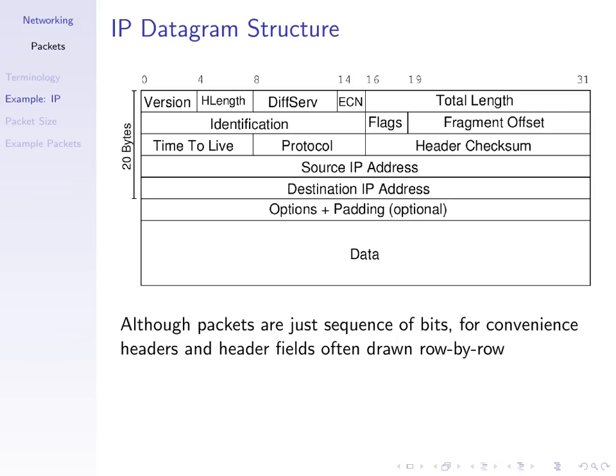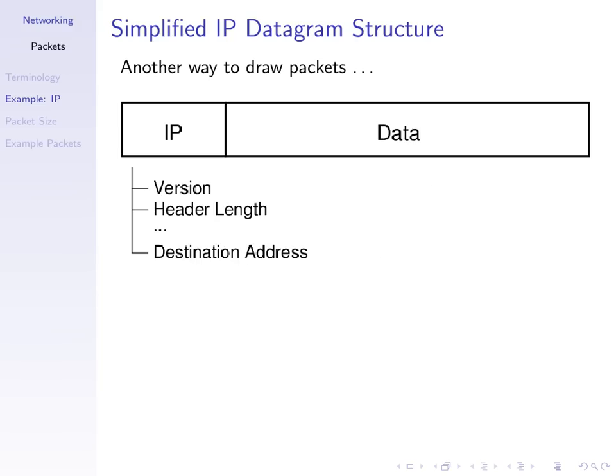Even though packets are just a sequence of bits, when we want to draw or describe them, for convenience headers and trailer fields are often drawn row by row. Sometimes we draw them in a simpler form — just the header and the data or payload — a single row indicating the IP header followed by the data, with those header fields listed underneath. These are just different ways to communicate the structure of a packet.